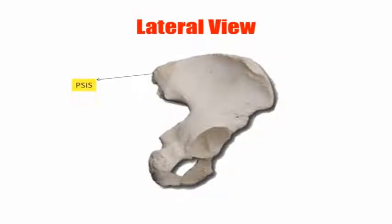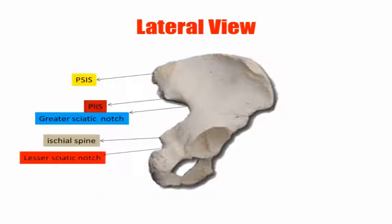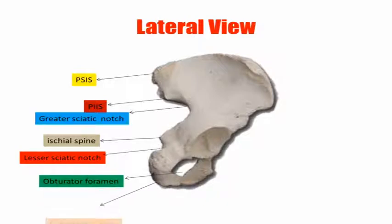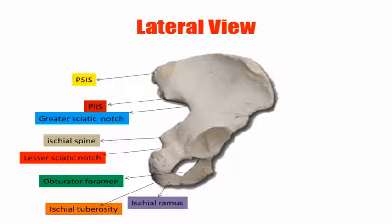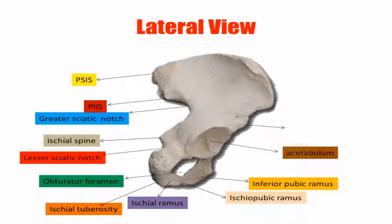This is the lateral view. First there is the posterior superior iliac spine, then the posterior inferior iliac spine, and this is the greater sciatic notch. This is the ischial spine and this is the lesser sciatic notch. It is the obturator foramen, and this is the ischial tuberosity, the ischial ramus, the ischiopubic ramus, the inferior pubic ramus, and the acetabulum. This is the anterior inferior iliac spine and the anterior superior iliac spine, and the iliac crest.